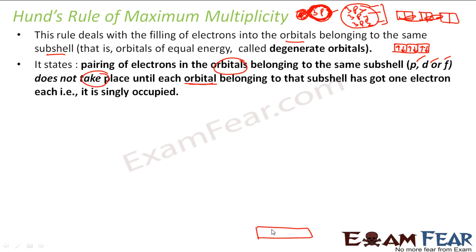For example, consider the 3p subshell with three orbitals: 3px, 3py, and 3pz. The first electron goes into 3px. The second electron does not pair in 3px — it goes into 3py. The third goes into 3pz. Only after all three orbitals each have one electron does pairing begin, so the fourth electron starts pairing in 3px.